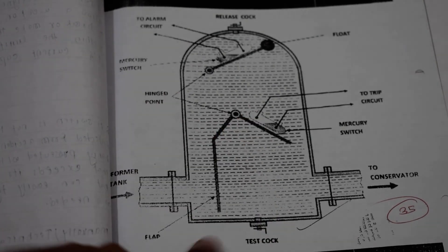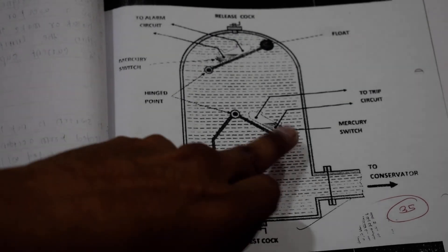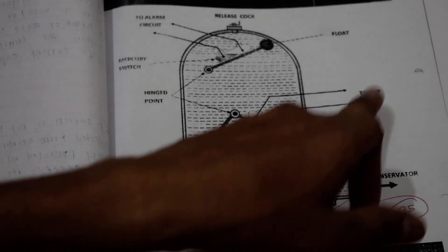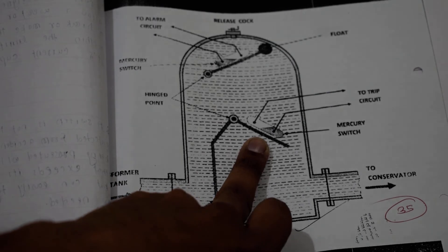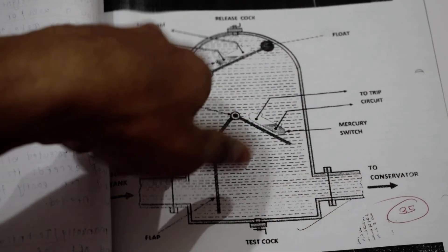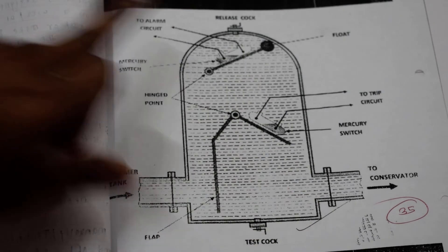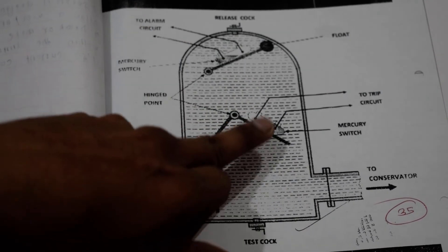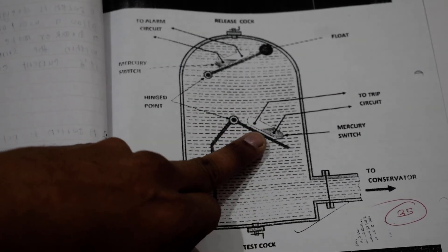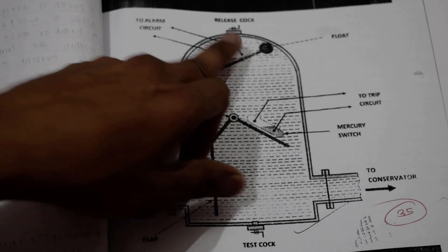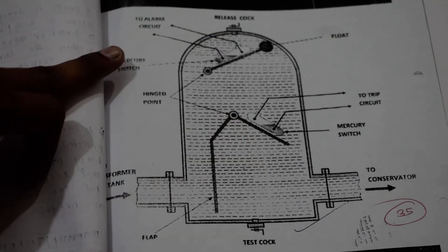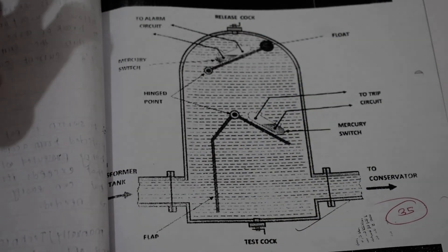This is a hinge here, this is a flap, and this is a mercury switch connected to the trip circuit. Here is the float which is connected to the alarm circuit. This directly trips and releases the relay.